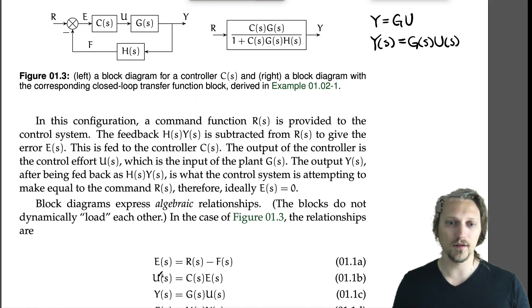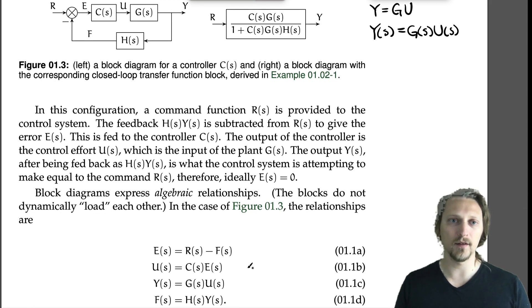The transfer function is the ratio of the output over the input, which gives us this relationship between the output and the input. The G block: Y, the output of the G block, is equal to GU. So Y equals GU. And then finally for the measurement block, Y goes in, F comes out, so F equals HY.